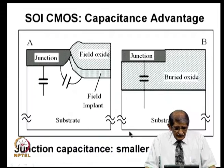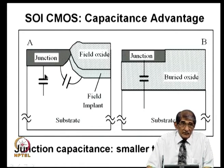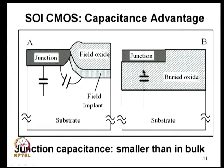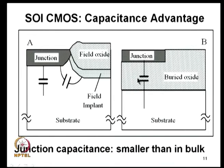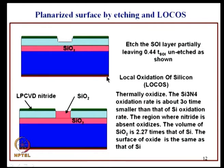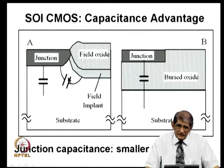In radiation environments, high-energy particles like gamma rays generate electron-hole pairs in silicon, which can cause large drain currents and latch-up in CMOS. The junction capacitance in SOI depends on the buried oxide capacitance, which is very small due to the thick buried oxide. Additional parasitic capacitances under field oxide and implant regions are also reduced.